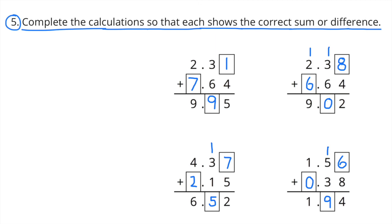Number 5. Complete the calculations so that each shows the correct sum or difference. 2.31 + 7.64 = 9.95. 2.38 + 6.64 = 9.02. 4.37 + 2.15 = 6.52. 1.56 + 0.38 = 1.94.